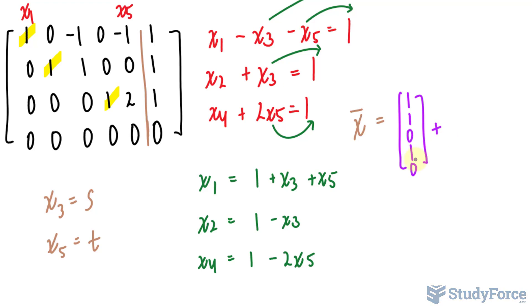now since we assigned s as x sub three, I'll write down s, and I'll look at each of these equations and write down the coefficient of s. So in this equation, in the first row, x sub three represents s, and it has a coefficient of one. So I'll write down one.